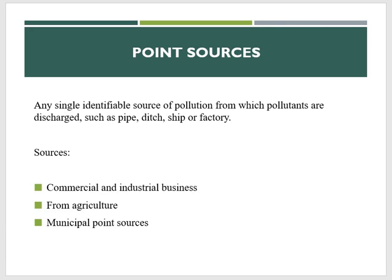To control point source discharges, factories, sewage treatment plants, and other point sources must obtain a permit from the government before they can discharge their waste or effluents into any body of water. Prior to discharge, point sources must use the latest technologies to treat their effluents, reduce the level of pollutants, and then release them into the water body.